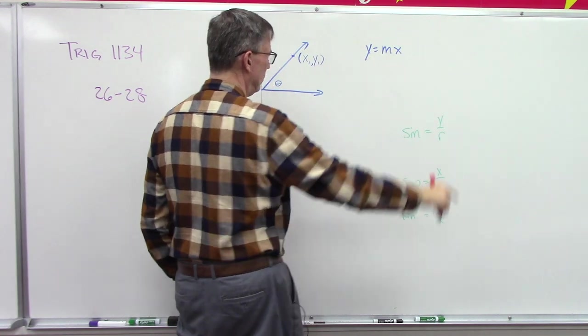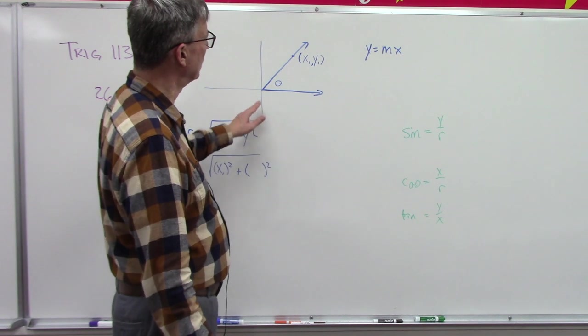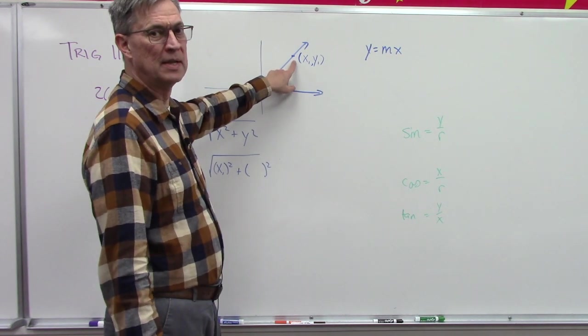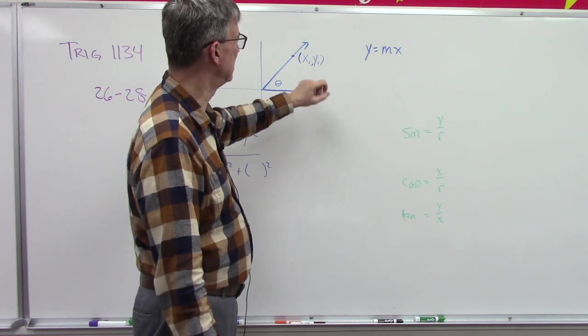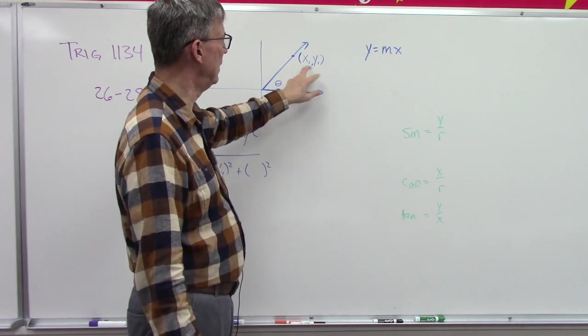So we're going to just take some random point and without knowing the numbers, we're just going to call it x sub 1 and y sub 1 - that just means the x and the y value for our first random point that we just plug in.